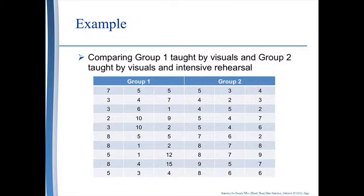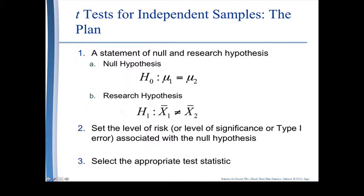Here is a chunk of data. Normally our data would be organized in columns or rows when working in Excel. Here is our familiar 8-step process that Salkind has laid out for us. First, we state our null hypothesis and our research hypothesis. The null hypothesis is that there is no difference, and our research hypothesis is that there is a difference. Step 2 is selecting a level of risk — the probability of committing a type 1 error — usually 0.05.